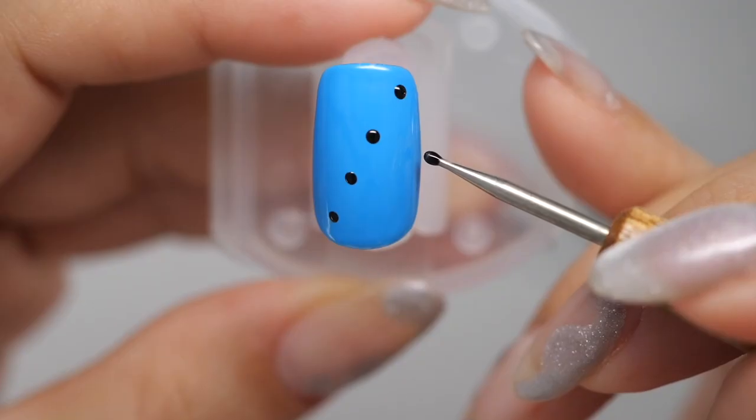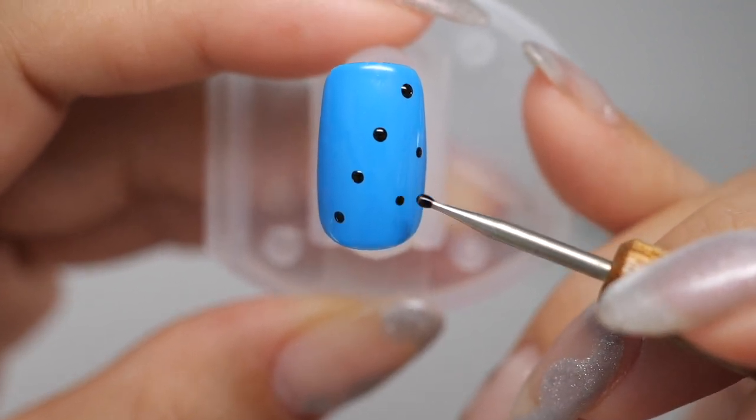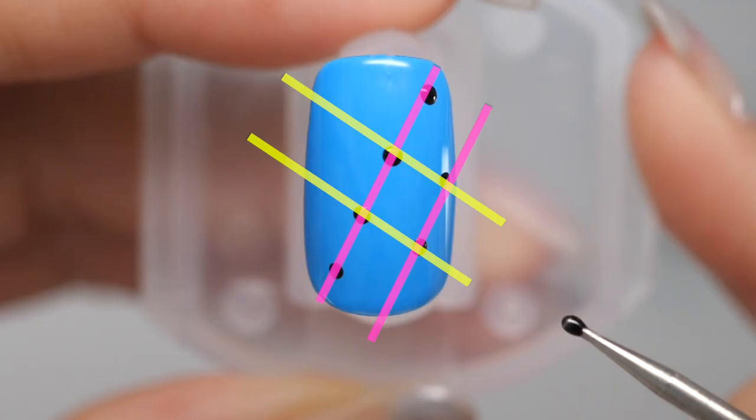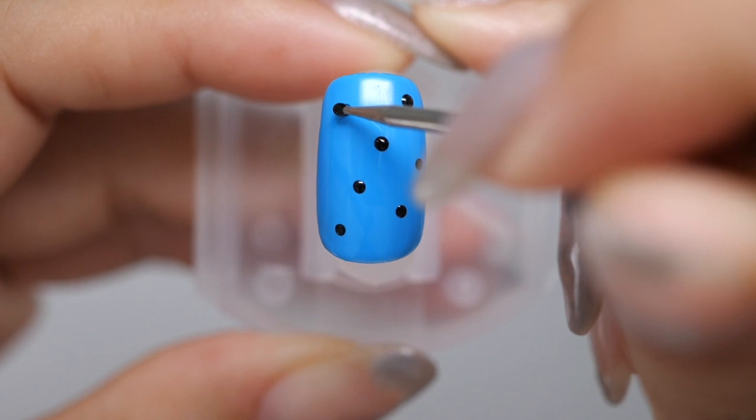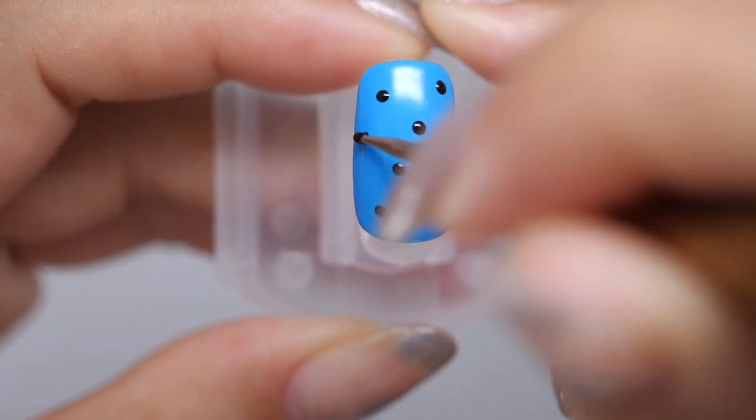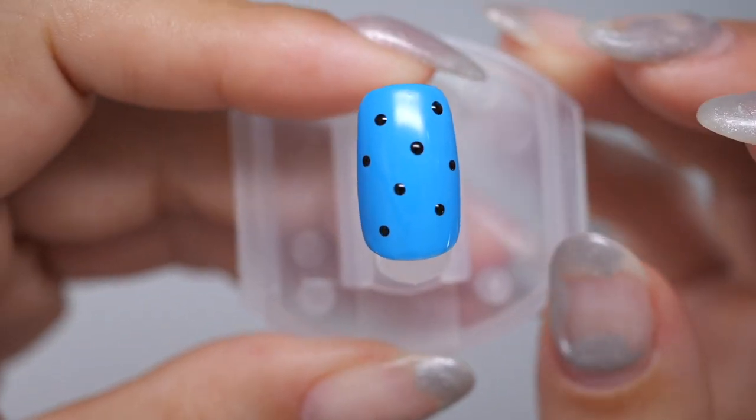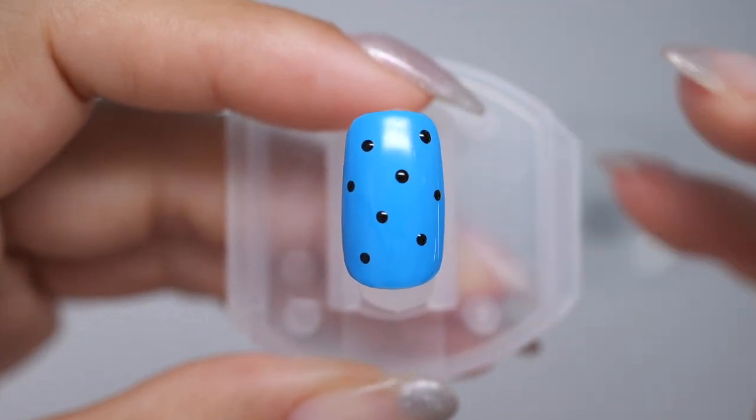Do the same thing again, this time drawing two dots on a diagonal line in the lower right corner. Draw the dots so that the pink line and the yellow line are parallel to each other. Then draw two dots on the same line in the upper left corner. Once the dots have been drawn, let them cure.